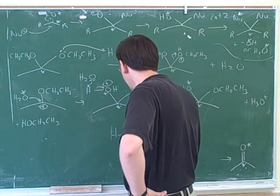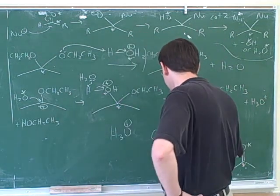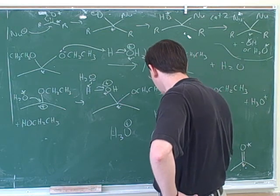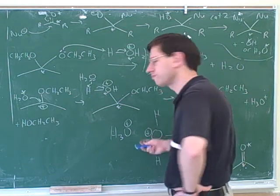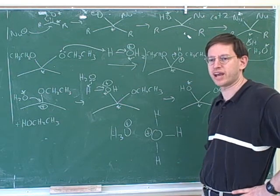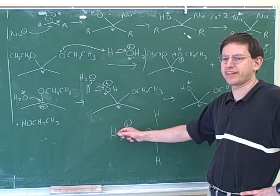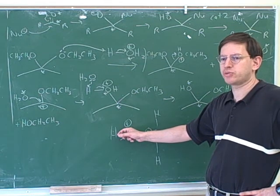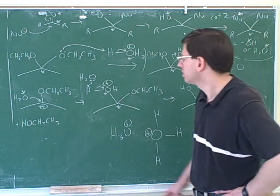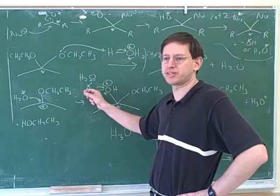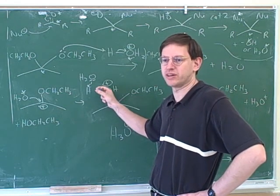So H3O plus really looks like this. Right? This is an oxygen with three bonds to hydrogen. Well, if you just want to write it in the most condensed format, you would write it like this. But if you want to show the H3O plus donating a proton, you should show one of the bonds to one of the protons, just so that you can put in the electron pushing arrows.